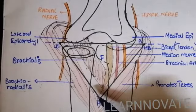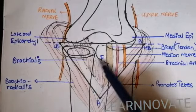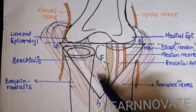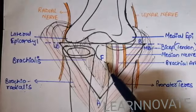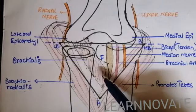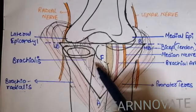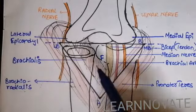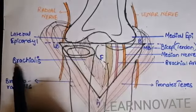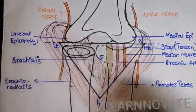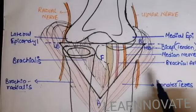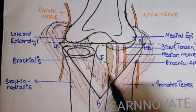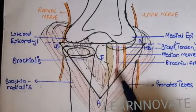This triangle, or the cubital fossa, has a floor. The floor is formed from certain structures and tendons. The floor is mostly formed by a muscle that we call as the brachialis, which we have discussed in a separate video. The function of brachialis is to flex the forearm, and this brachialis is forming the floor of the cubital fossa.